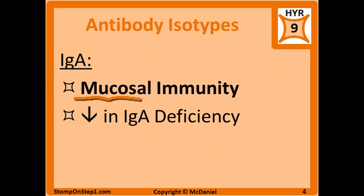IgA forms mucosal immunity and protects the body's orifices. It is found in mucus, tears, saliva, and breast milk, and prevents the entry of pathogens into the GI, urogenital, and respiratory tracts. A selective immunodeficiency called IgA deficiency occurs when you have low IgA but normal levels of other isotypes. It is common but largely asymptomatic, and will be covered in more detail in the immunodeficiency video later in the section.